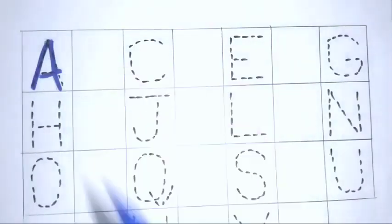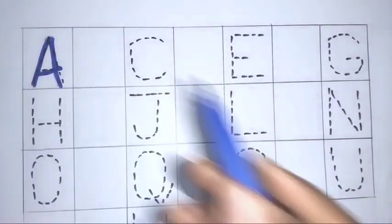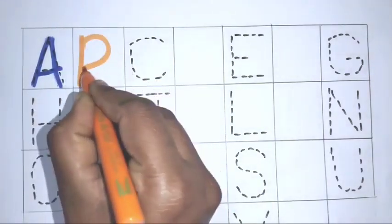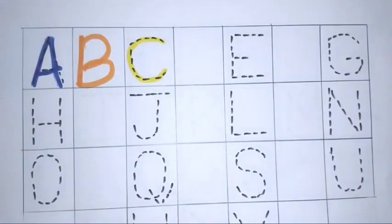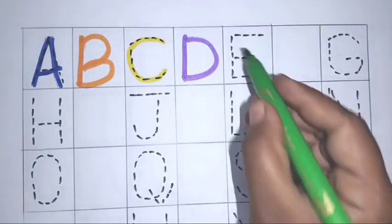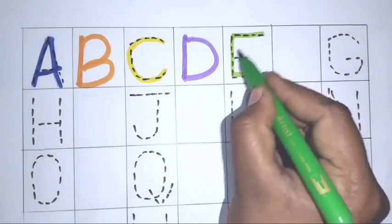A for anchor. B for ball, C for cat, D for doll, E for elephant.